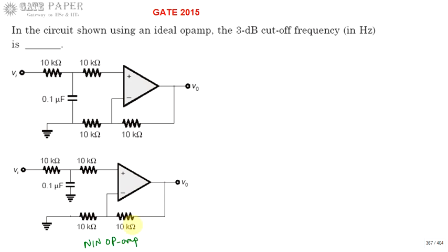Non-inverting op-amp provides a gain of 1 plus RF by R1, where RF is the feedback resistor and R1 is the resistor connected to inverting terminal.